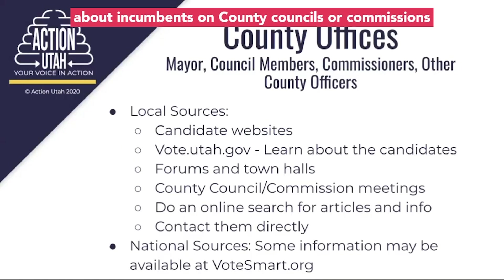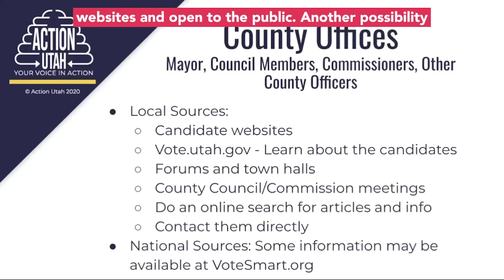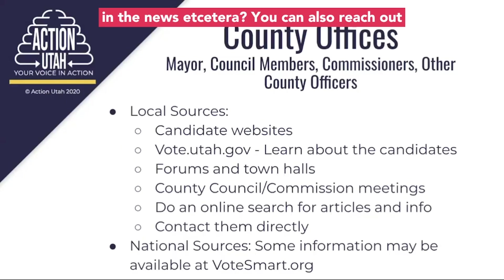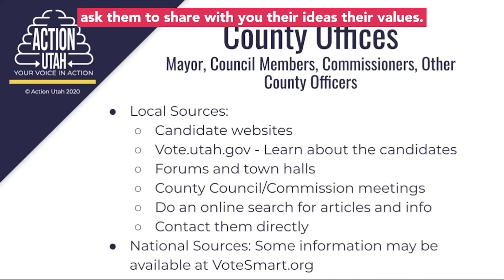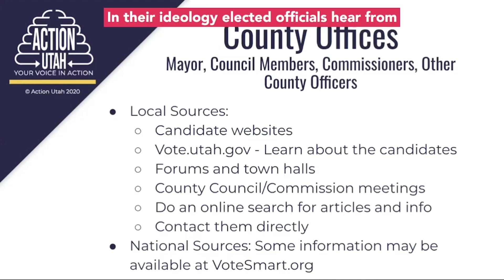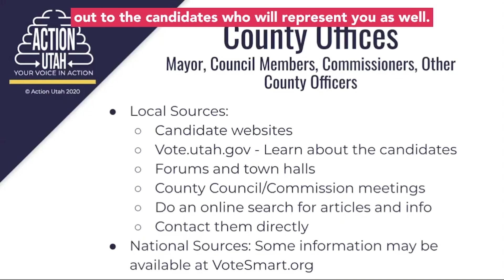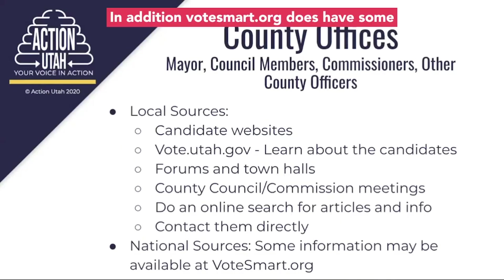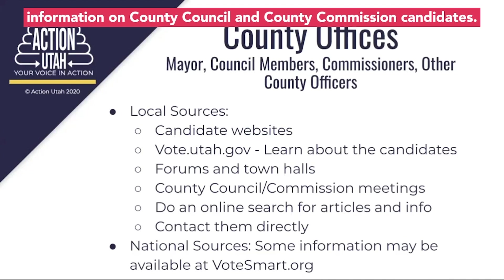One great way to get to know about incumbents on county councils or commissions is by attending a meeting. Commissions and councils meet regularly with meetings listed on their websites and open to the public. Another possibility is to do an internet search for articles or other information about the candidates, like what is their business or profession, have they been in the news, etc. You can also reach out to candidates directly — call or email them and ask them to share their ideas, values, and ideology. Elected officials hear from constituents every day and it's okay to reach out to the candidates who will represent you as well. In addition, votesmart.org does have some information on county council and county commission candidates.